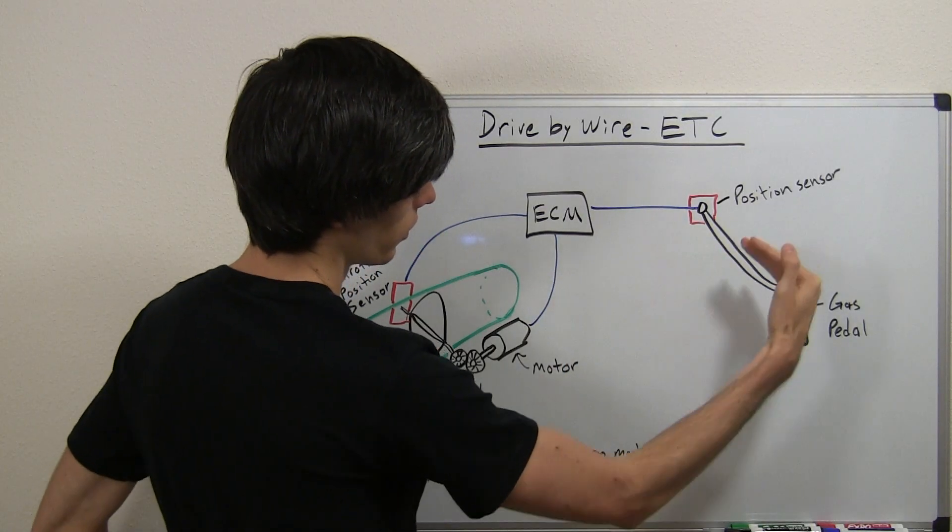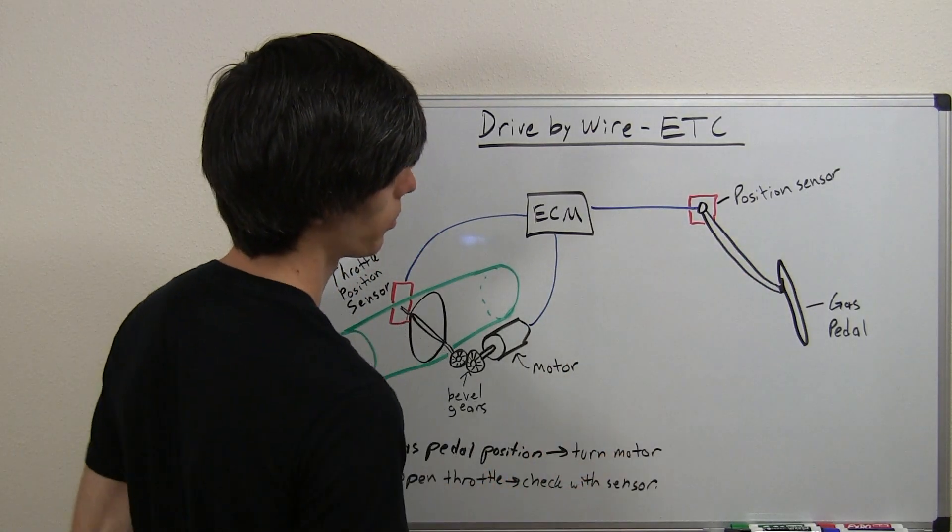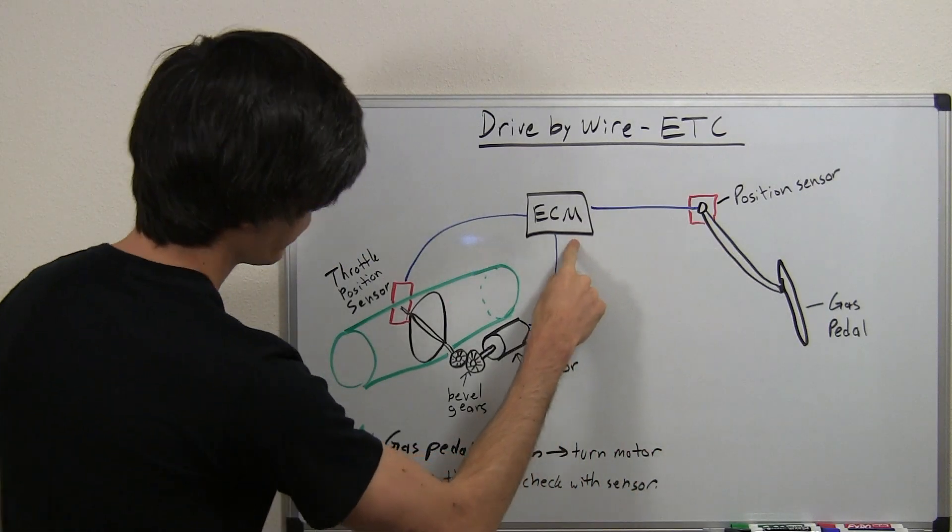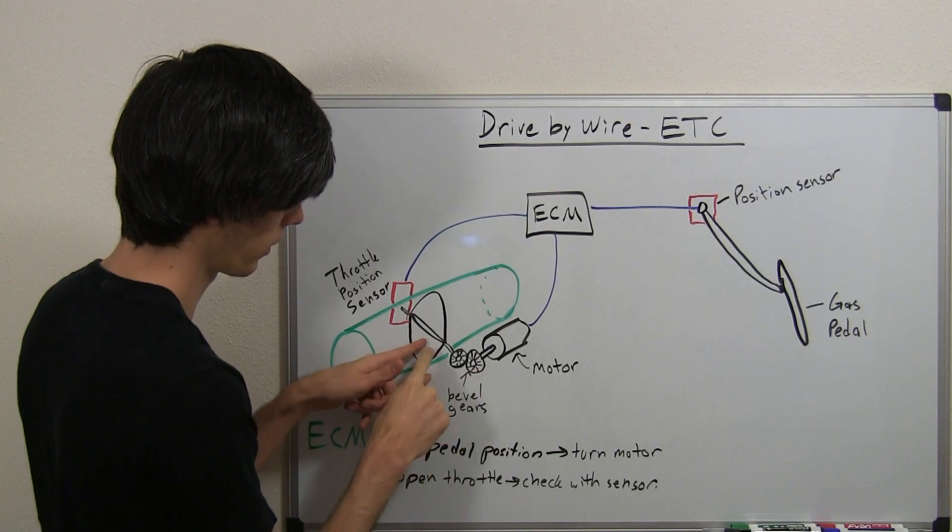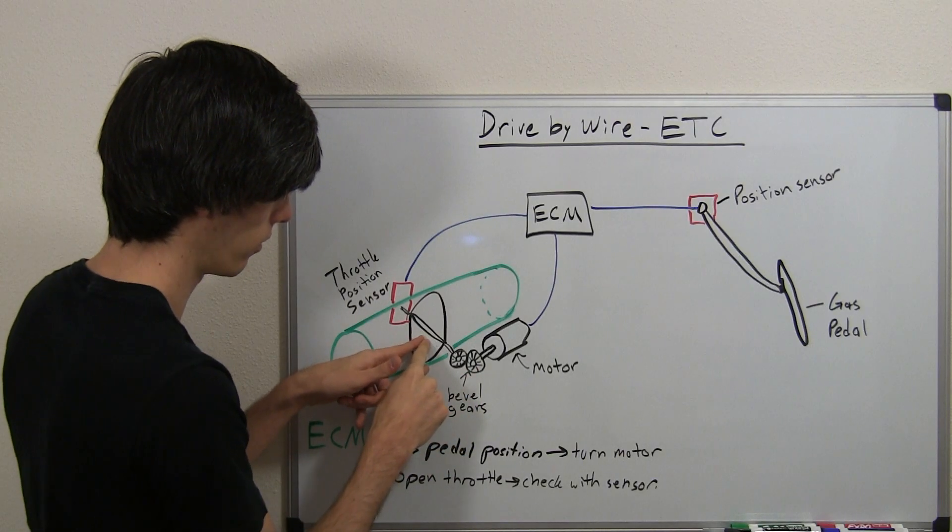So this position sensor senses how much you press in the gas pedal. When you press in the gas pedal, the engine control module tells the motor to turn, and that motor is connected to the butterfly valve in the throttle body.